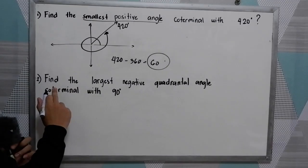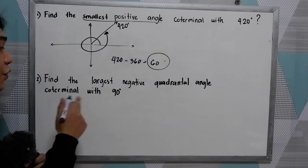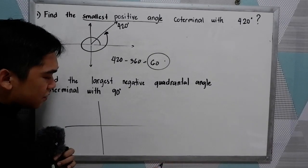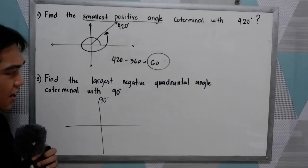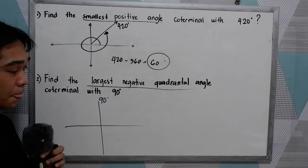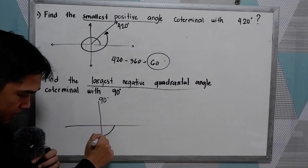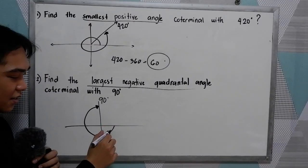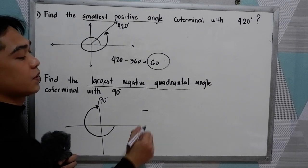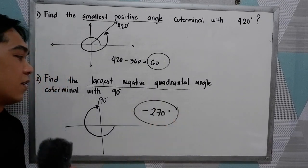Number two: find the largest negative quadrantal angle coterminal with 90. We know 90 is located here. Going clockwise, that is negative 270 degrees. Why negative 270? Because this is our initial side and we are going clockwise — negative 90, negative 180, negative 270. That is the coterminal angle of positive 90 degrees.